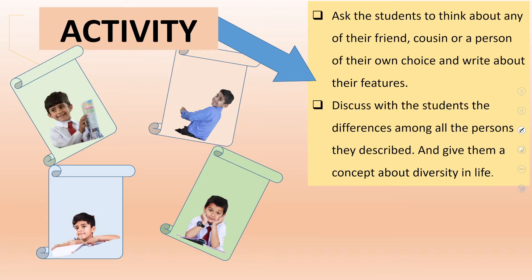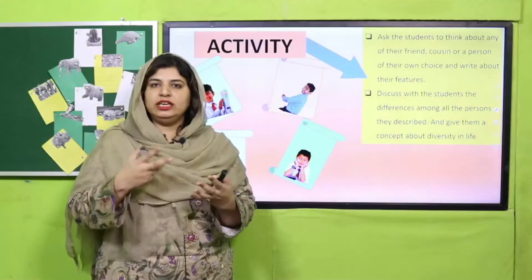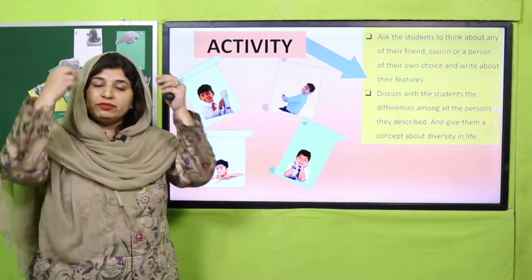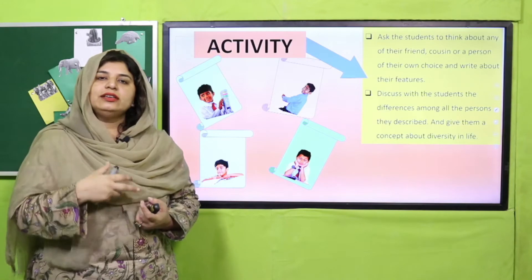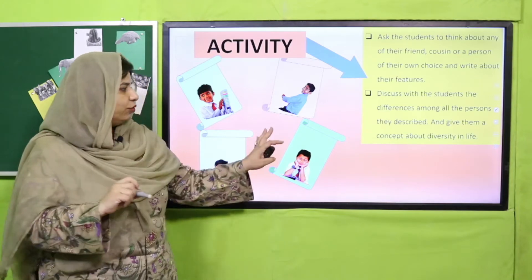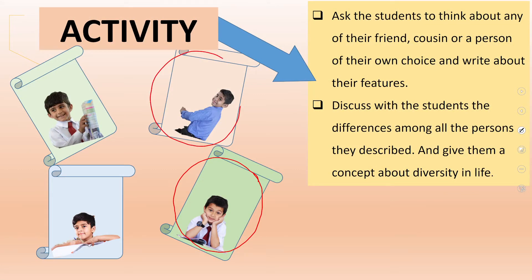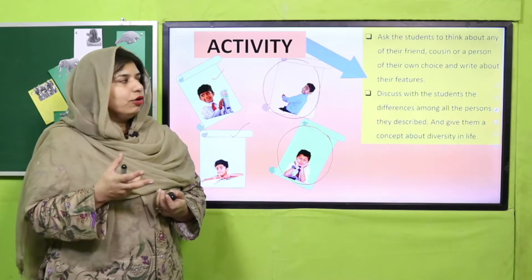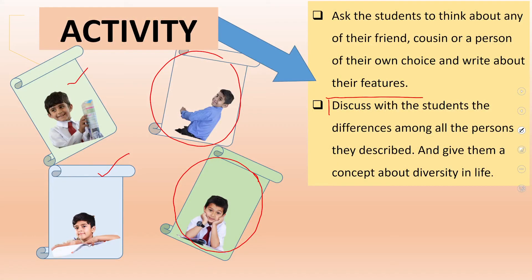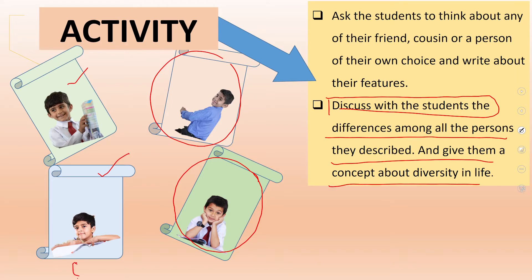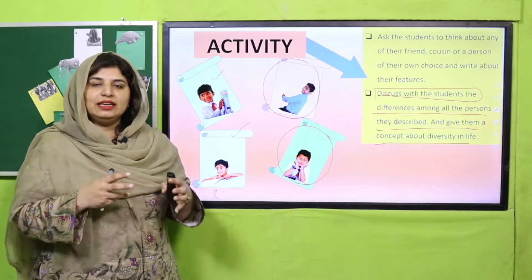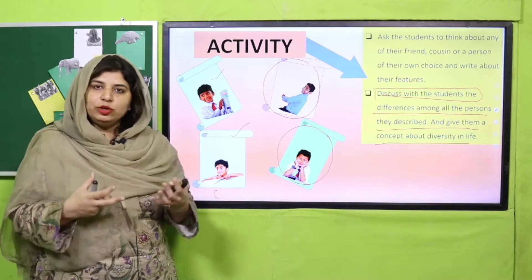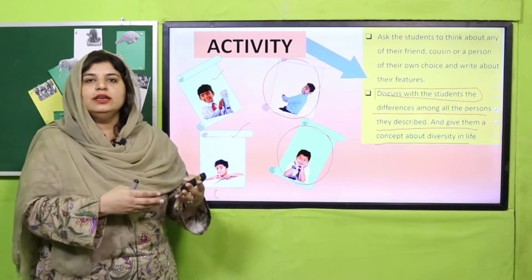Let us conduct an activity. Think about any personality — your friend, a person, a student, a teacher. Think about their personality and write their characters. Make notes: 3, 4, or 5 points about what you think about their personality — their appearance, nature, their likings. What do you think about that person? Discuss them and every student can see wide varieties among their behaviors — you have different natures, different choices, different rank, different looks.